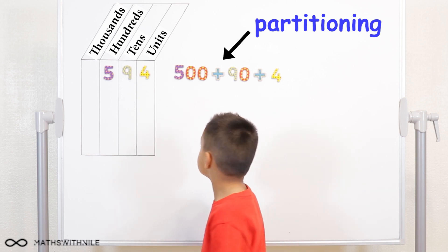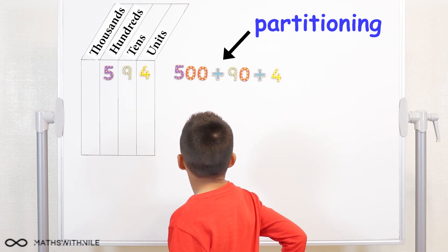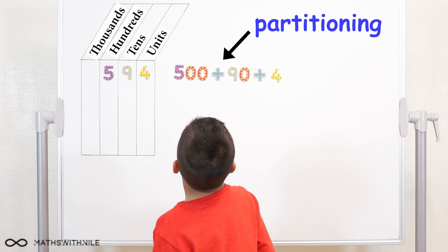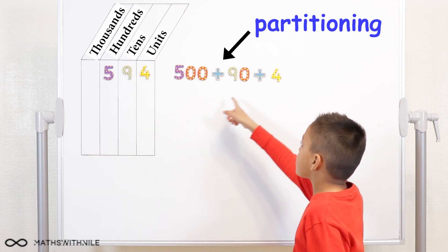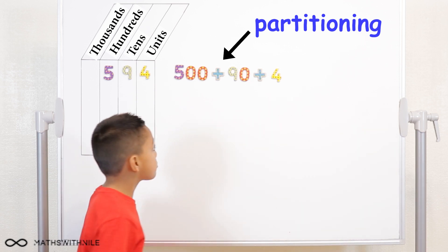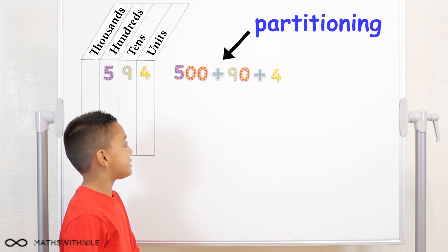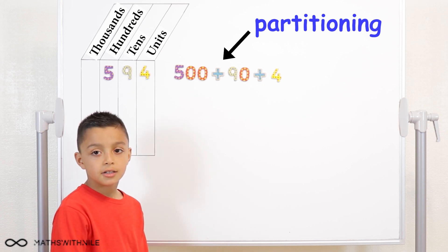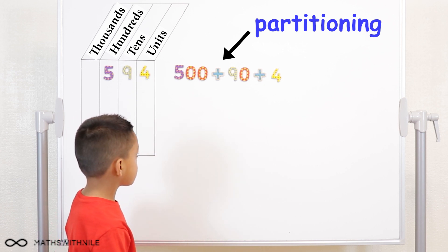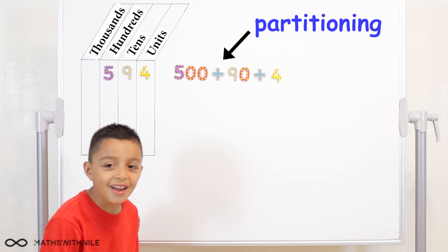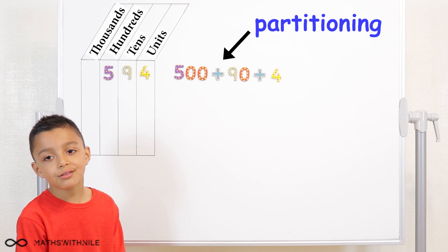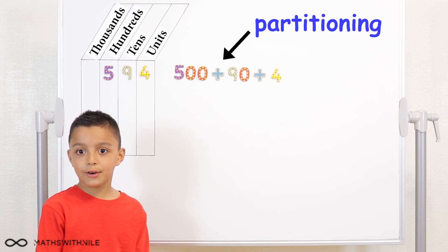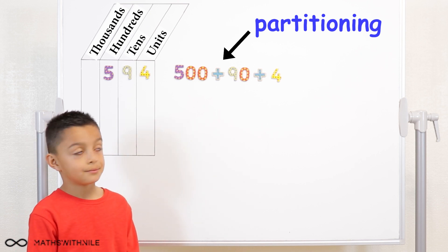So can you read out those numbers there? These numbers? Yes. Five hundred plus ninety plus four. And what is five hundred plus ninety? Five hundred ninety. Plus four? Five hundred and ninety-four. Okay, so that's what I've done.